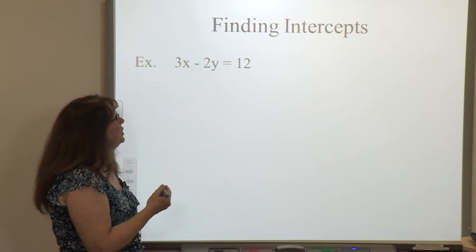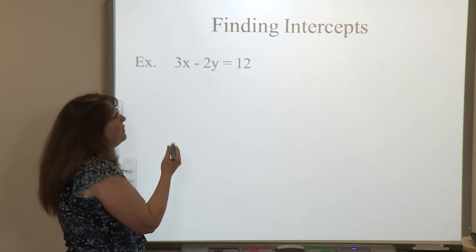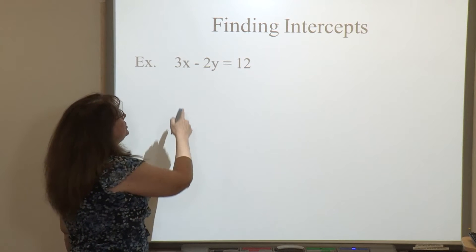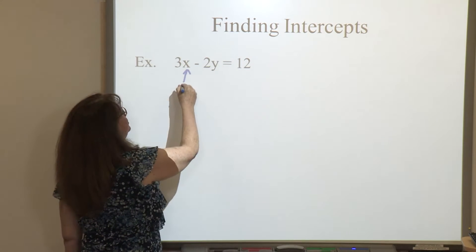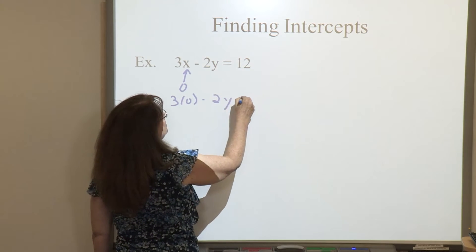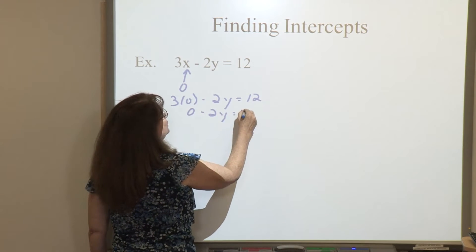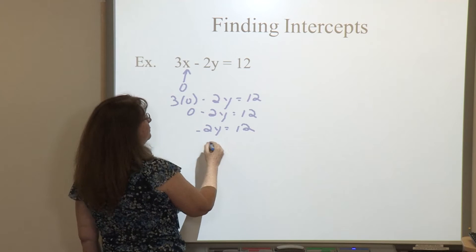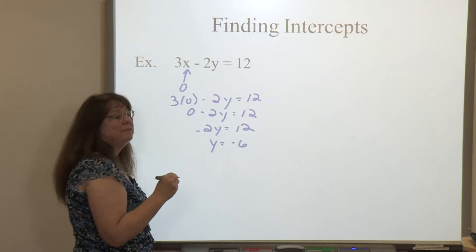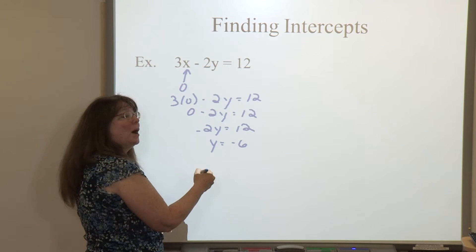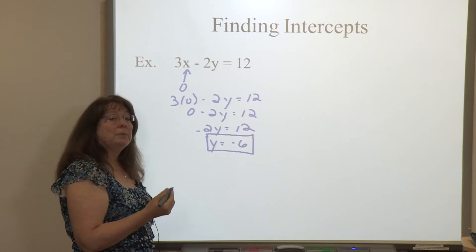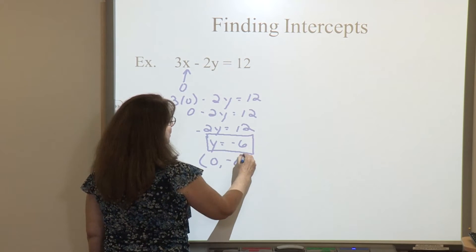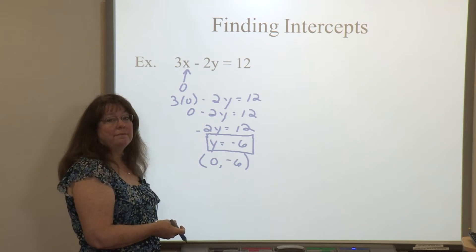So let's take this equation in standard form and find the intercepts. Finding intercepts is easiest when you have an equation in standard form. To locate the y-intercept, I want to plug in a value of 0 for x. So I'm going to multiply 3 times 0 minus 2y equals 12. That's going to eliminate the x variable, and I only have y to solve for. Dividing both sides by negative 2, I get y equals negative 6. This is your y-intercept, or where you're going to cross the y-axis. Sometimes you'll see it written as y equals negative 6, and sometimes as the ordered pair 0, negative 6.